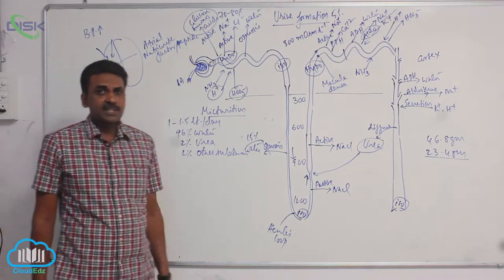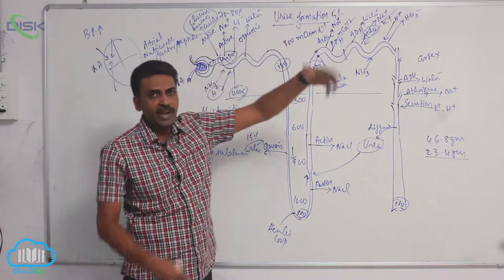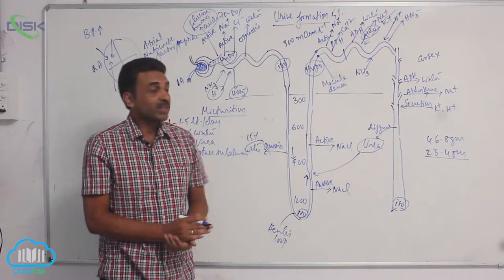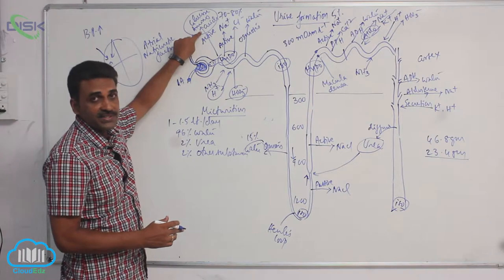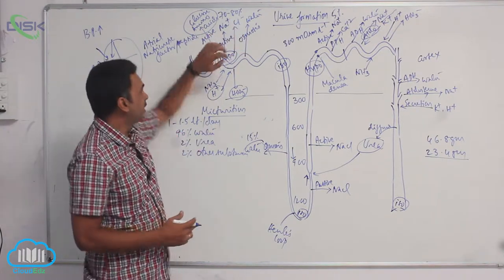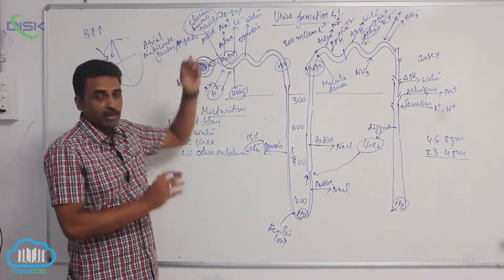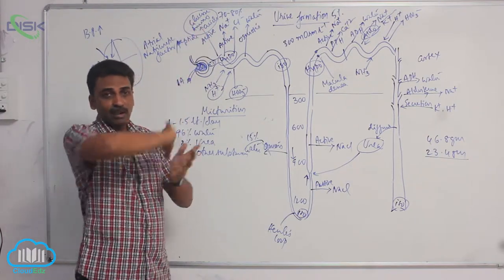Now, some substances, after they are filtered, they are effectively taken back at several places. Like glucose, amino acids, some salts, vitamins, they are completely reabsorbed. Glucose, amino acids, vitamins, they are completely reabsorbed. They are called high threshold substances.